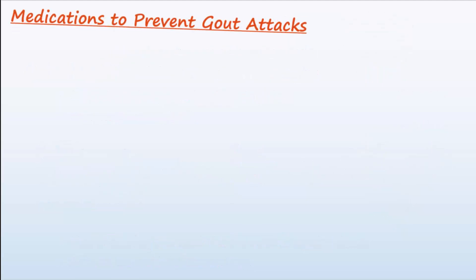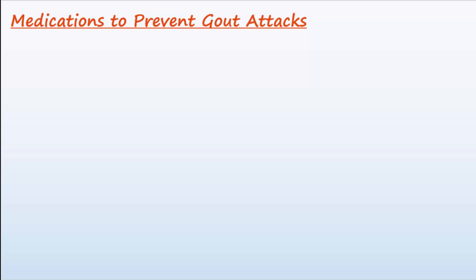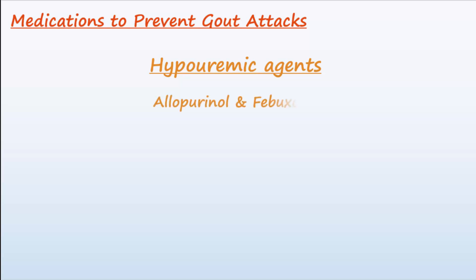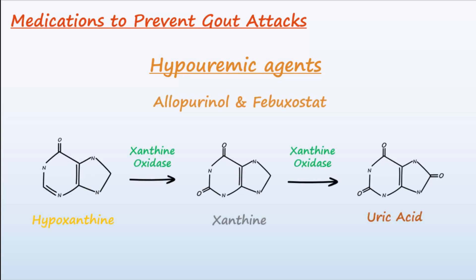Other medications prevent gout attacks, and fall under two main categories. The first are hypouricemic agents, which include allopurinol and febuxostat. These agents function to inhibit the actions of xanthine oxidase, thus preventing the formation of uric acid. Febuxostat is more selective than allopurinol in its inhibition of xanthine oxidase, but it is also more expensive.